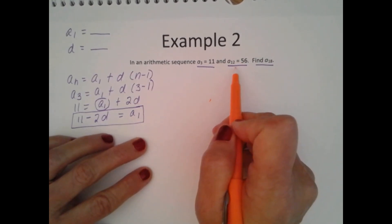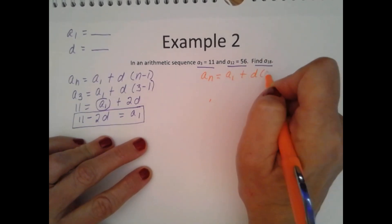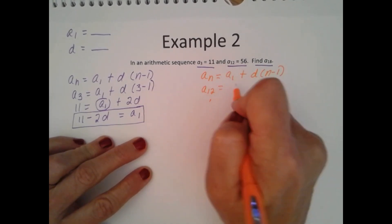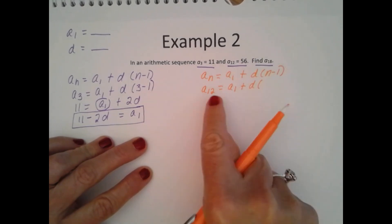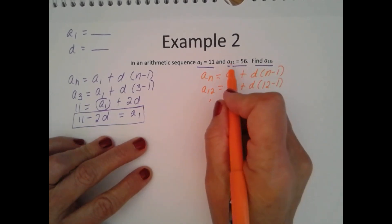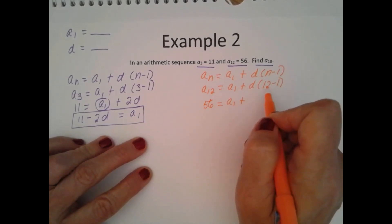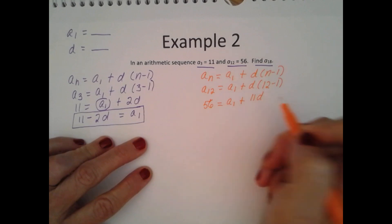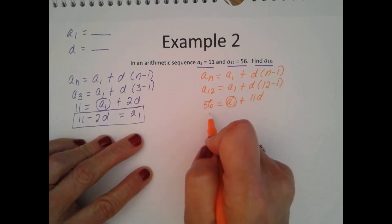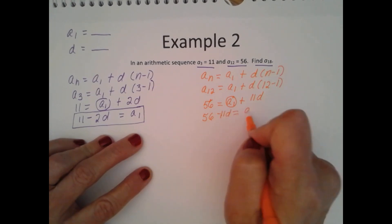Now let's do the same with A sub 12 is equal to 56. A sub n is equal to A sub 1 plus D times (n minus 1). We're looking for A sub 12, which equals A sub 1 plus D times (12 minus 1), substituting 12 in for n. A sub 12, I know its value is 56, is equal to A sub 1 plus 11D. I want to solve for A sub 1, so 56 minus 11D is equal to A sub 1.